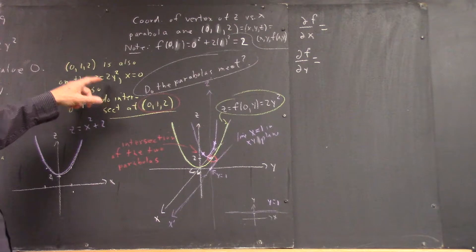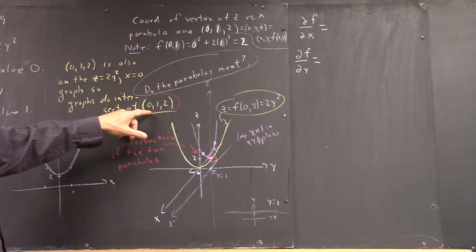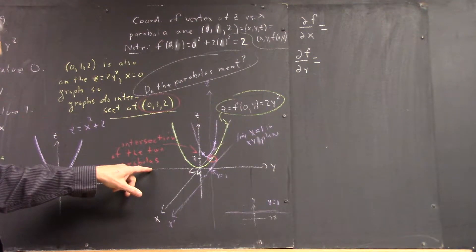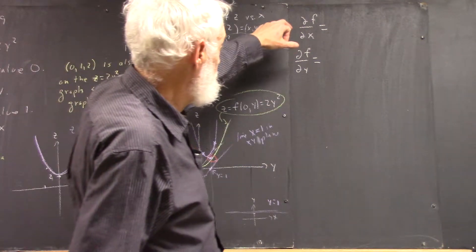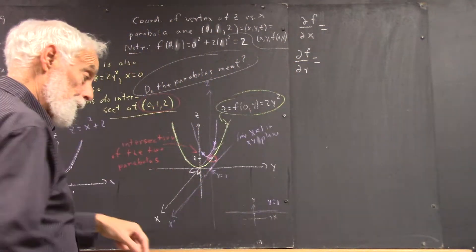So, this means that the two graphs intersect at this point. Now, what we want to do is calculate the partial derivatives of F and see what it tells us about this picture.